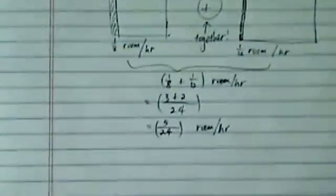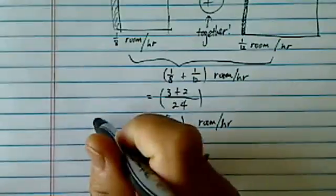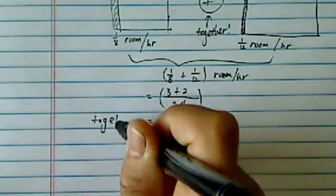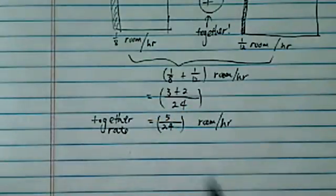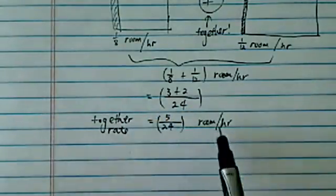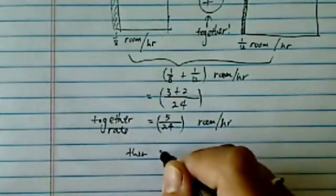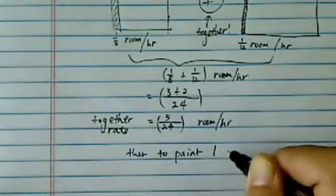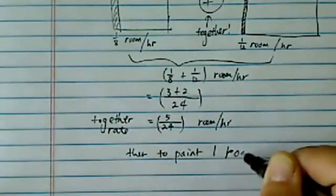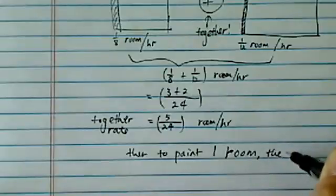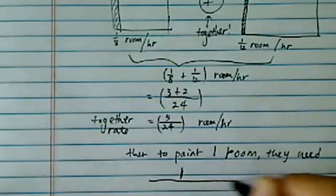Almost there, so, in the job completion, when they're working together, you need to find a together rate. Together, they can paint 5 over 24 of the room per hour, then to paint 1 room, it's supposed to be an R here. They need 1 over that rate.